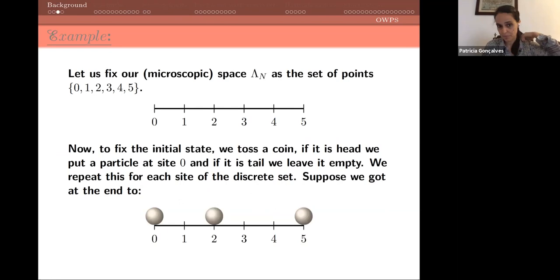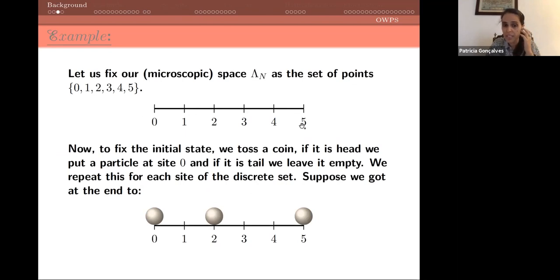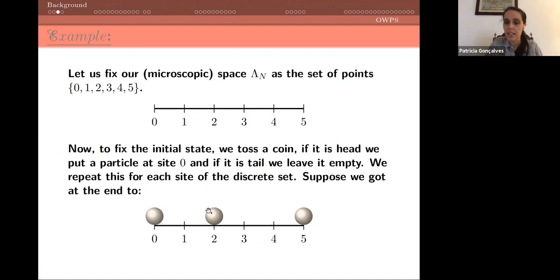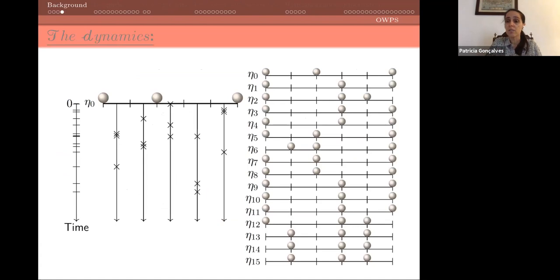Let's suppose the microscopic discrete space is lambda_n with points zero, one, two, three, four, five. We want to fix the initial condition for the system. Suppose we toss a coin: if you get heads or tails you put a particle or not. You might get a particle at zero, no particle at one, and so on — this fixes the initial condition of the system.